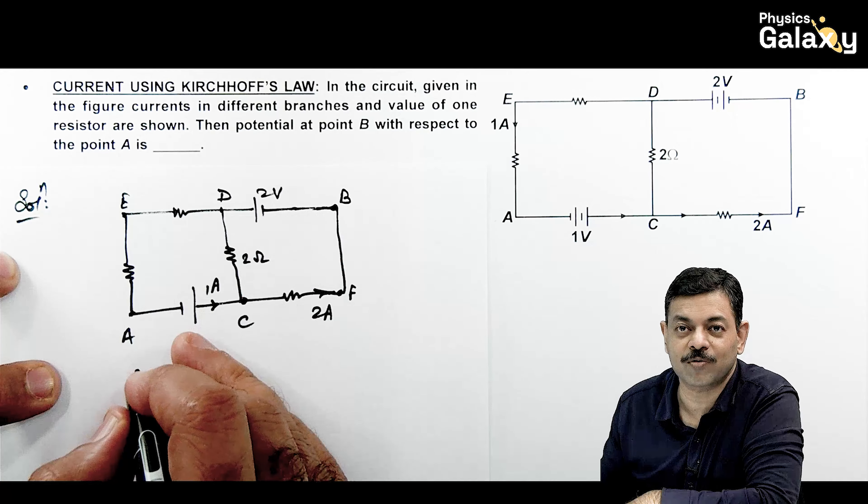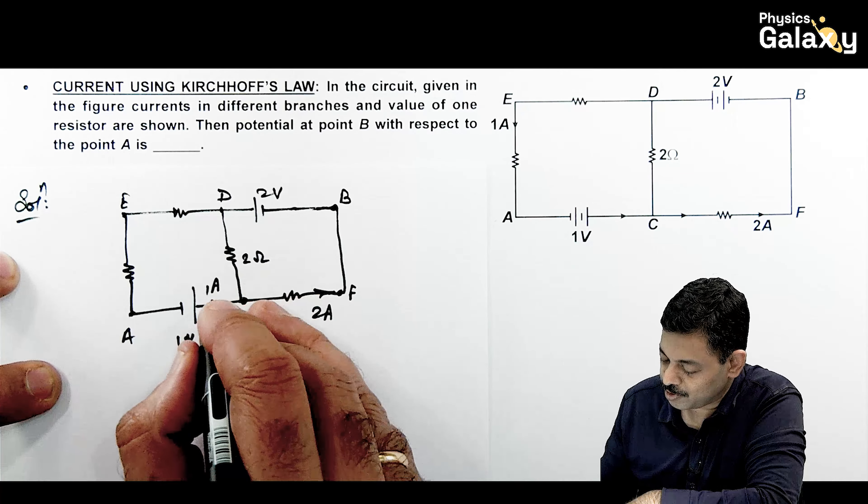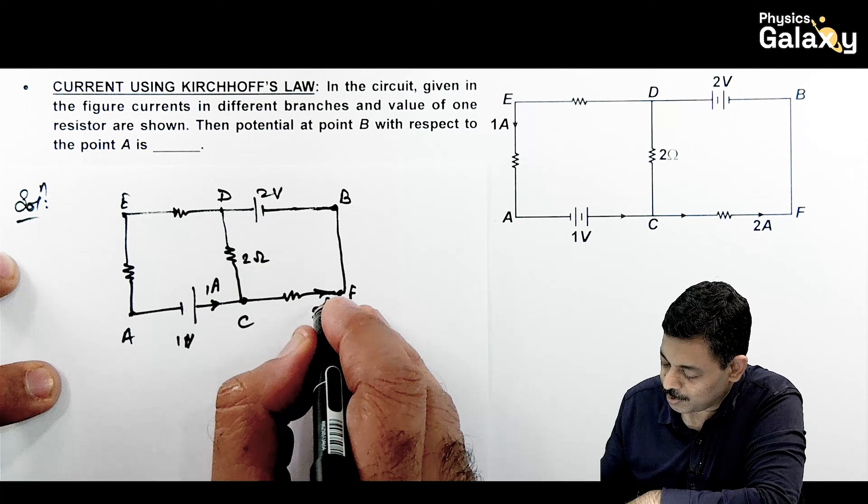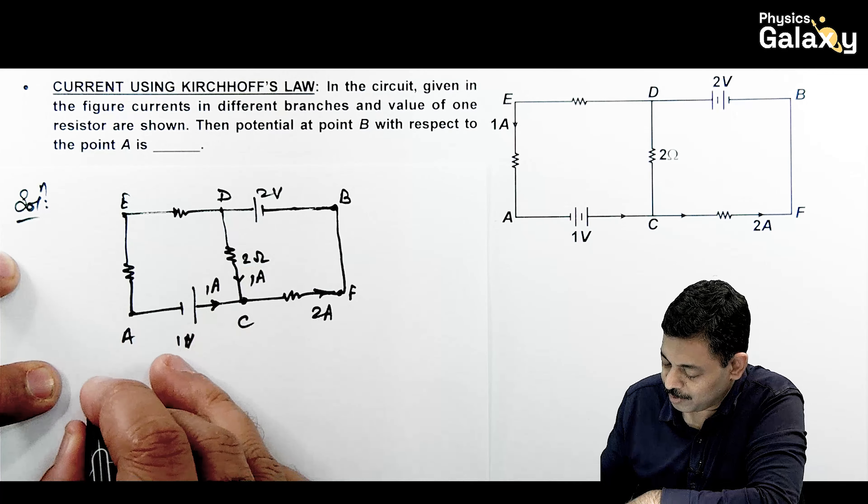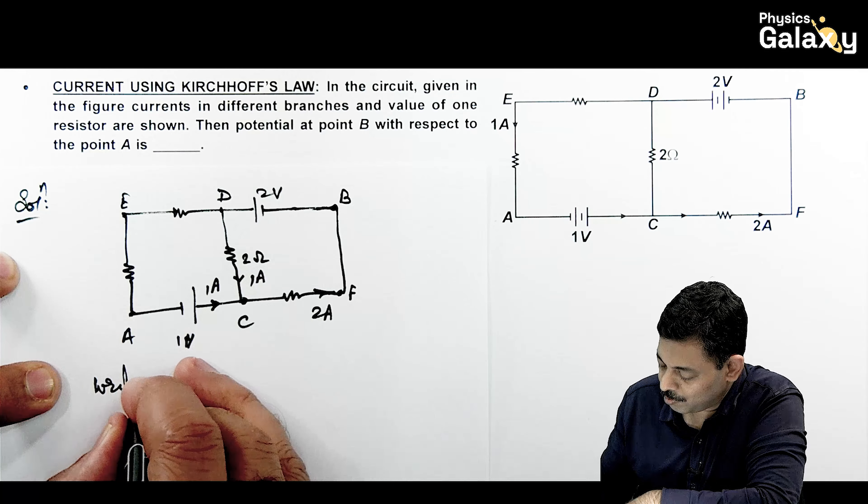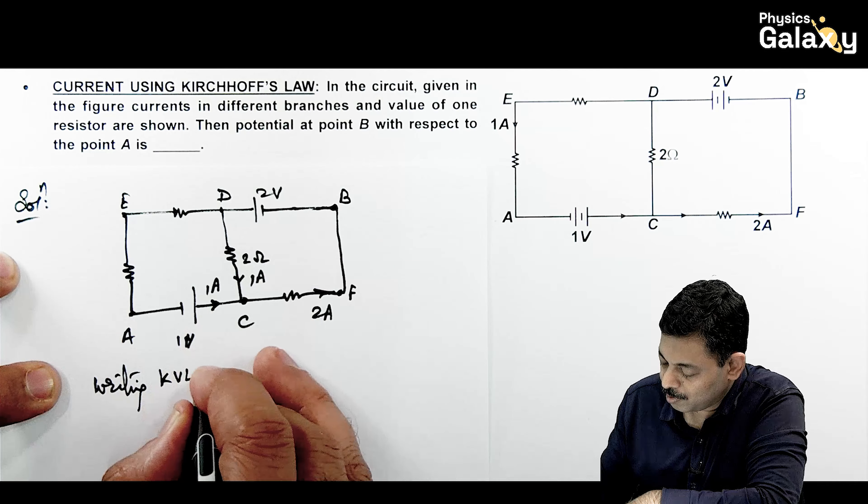So in this situation, if we write Kirchhoff's voltage law from A point to B point, then VA minus VB we can take it. First, if we check with Kirchhoff's current law, this is 1 ampere, this is 2 amperes. So here there will be a current of 1 ampere.